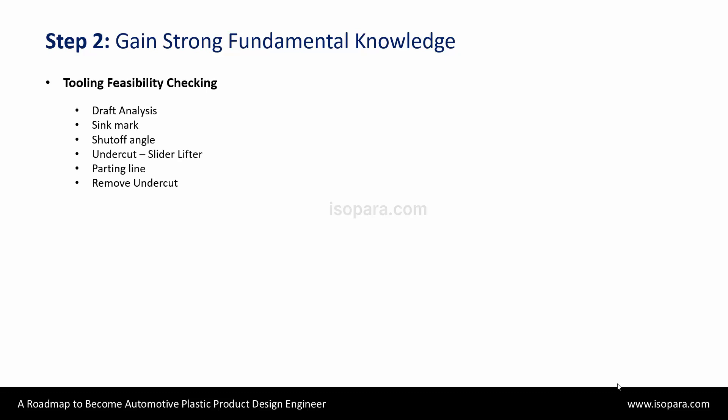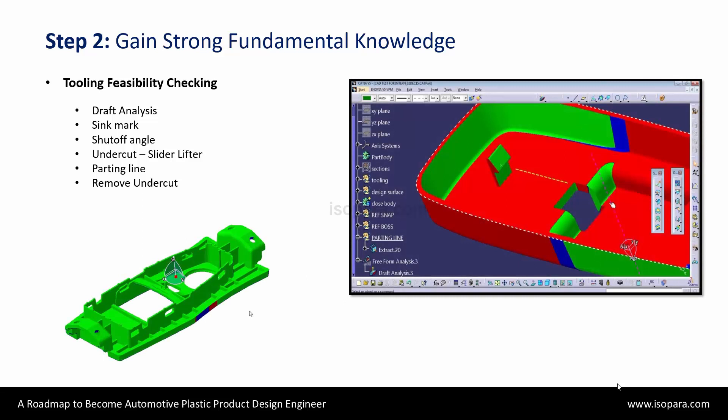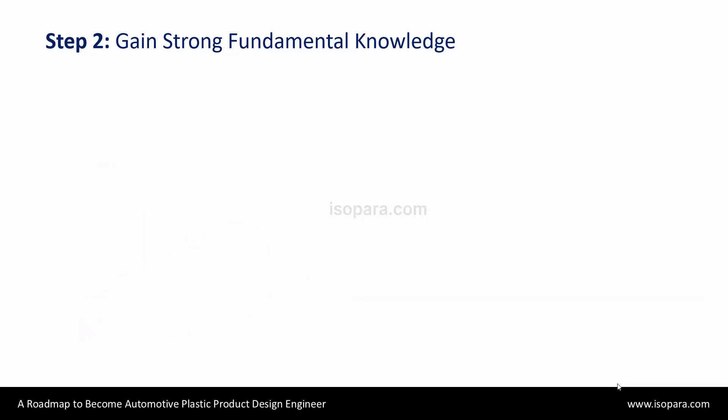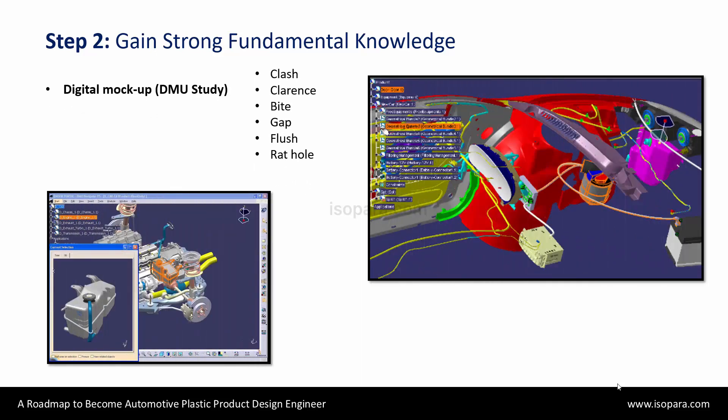Knowledge of draft analysis, sink mark, shut-off angle, undercut to be removed through slider lifter and parting lines is essential. You should also know the term digital mock-up, where you will understand the complete packaging of all the aggregates or parts surrounding your concerned part. Suppose you are designing a door trim — it should be surrounded by an instrument panel or dashboard and BIW parts like a side body, BIW, door assembly, and many more. You should also be able to check for clashes with another part, clearances with other parts, and biting gap flush. If you find a rat hole, you have to remove them.